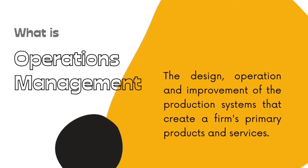What is operations management? When we produce, it goes through certain processes. Each of these processes is one type of operation, and our success as an organization lies in streamlining these operations in the best possible manner. So we need to manage the operations. All the design, operation, and improvement of our production systems which create the firm's primary products and services — that is, the firm's output — is what operations management covers.